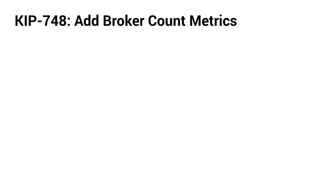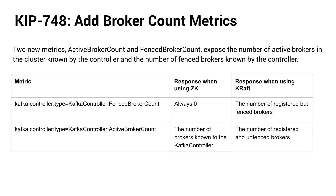First up, we have KIP 748, which brings us a couple new broker count metrics: fenced broker count and active broker count. These will be exposed by both the Kraft and ZooKeeper controllers, but the values will differ slightly depending on which you're using. Both will respectively expose the number of active brokers in the cluster known by the controller, and the number of fenced brokers known by the controller.